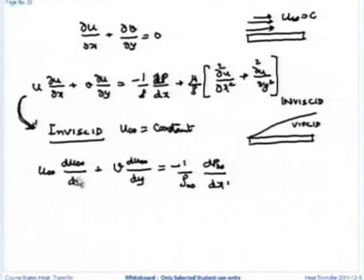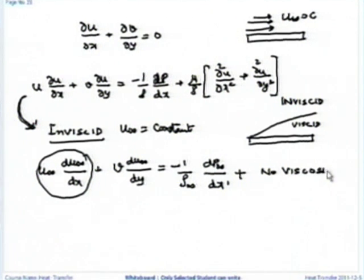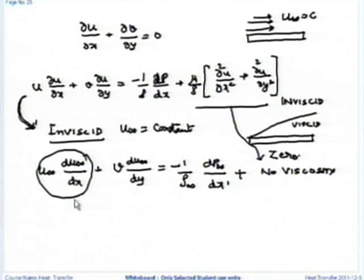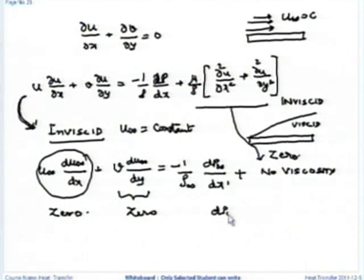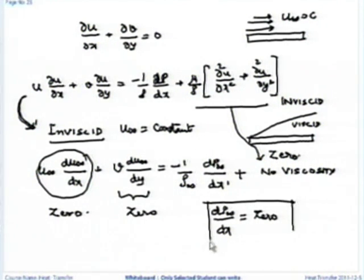U-infinity is constant means this term becomes 0 and this term is 0, because viscosity is 0 in the inviscid portion. Again U-infinity is constant so this term is 0. That means what I end up getting is dp-infinity by dx equal to 0. This is only applicable for flows in which U-infinity is constant — for flow over a flat plate.